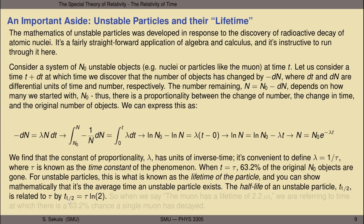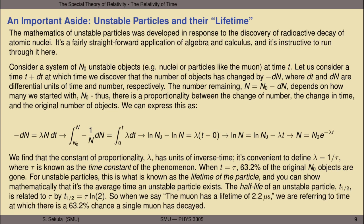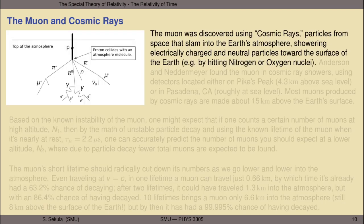So when we say the muon has a lifetime of 2.2 microseconds, we're referring to the time at which there is a 63.2% chance that any single muon has decayed—vanished from the original sample of muons.